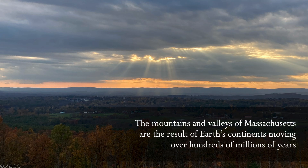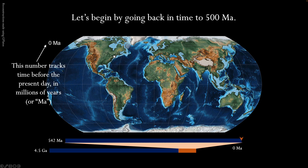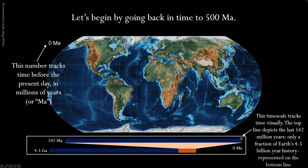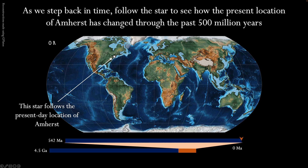The landscape surrounding Amherst College is the result of Earth's continents moving over hundreds of millions of years. Let's begin by going back in time to 500 million years ago, or MA for short. The number in the upper left corner tracks time before the present day in millions of years. The timescale at the bottom of the screen tracks time visually — the upper bar depicts the last 542 million years, only a fraction of Earth's 4.5 billion year history, represented by the lower bar. The star follows the present day location of Amherst. As we step back in time, follow the star to see how the present day location of Amherst has changed through the past 500 million years.